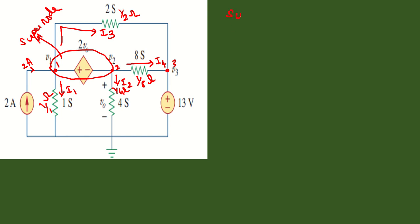For this super node, first we'll write V1 minus V2 equals 2V0. So we have one equation first. Now we are applying KCL for this super node.